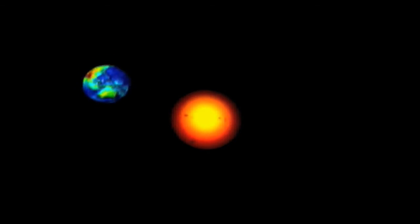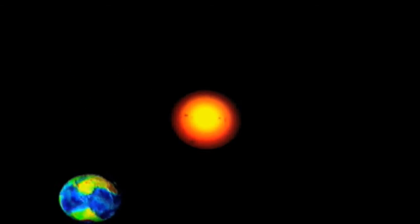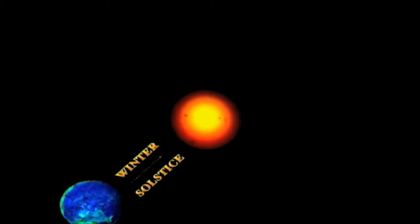Two different times a year, the sun and earth are farthest apart. Sunlight is then at its greatest angle to the equator. These times are called the solstice.